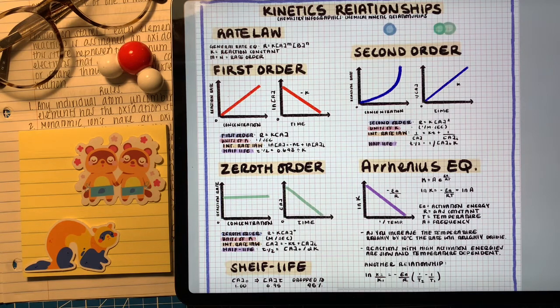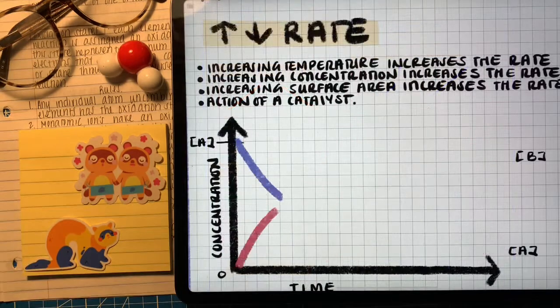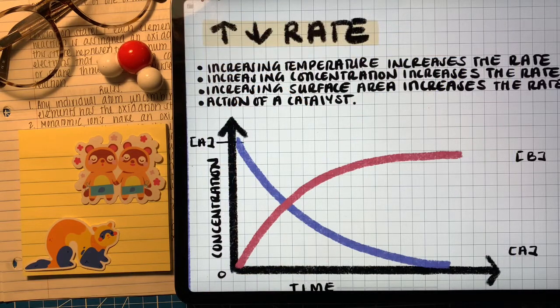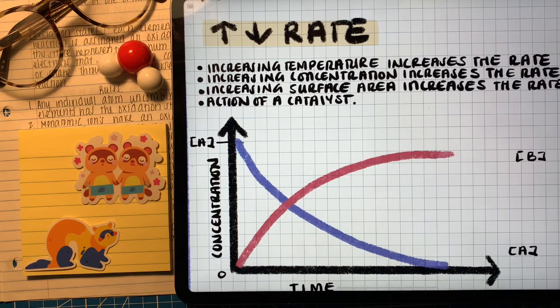You might be wondering about the Arrhenius equation I have there. This is the relationship between the rate constant and temperature. Do you remember when we were talking about rate? You mentioned the different factors that can increase the reaction rate such as temperature, concentration, surface area, and catalyst.